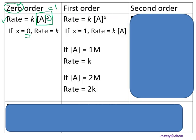If the order of reaction is first order, x equals 1, so the rate of reaction becomes rate = k times [A]. If the concentration of A is 1 molar, the rate is k. If the concentration of A is doubled to 2 molar, then the rate of reaction equals 2k.